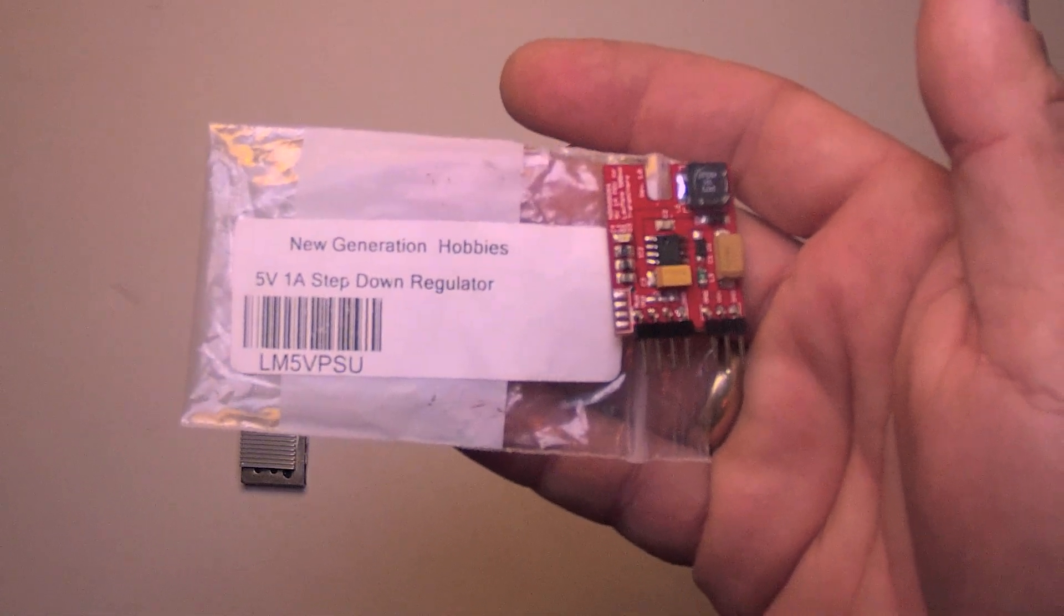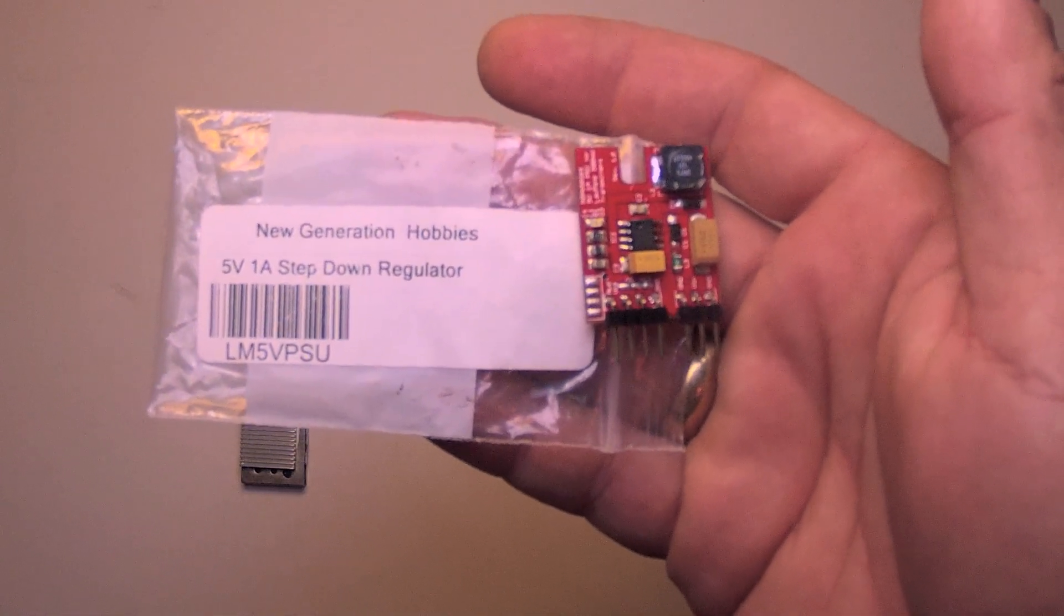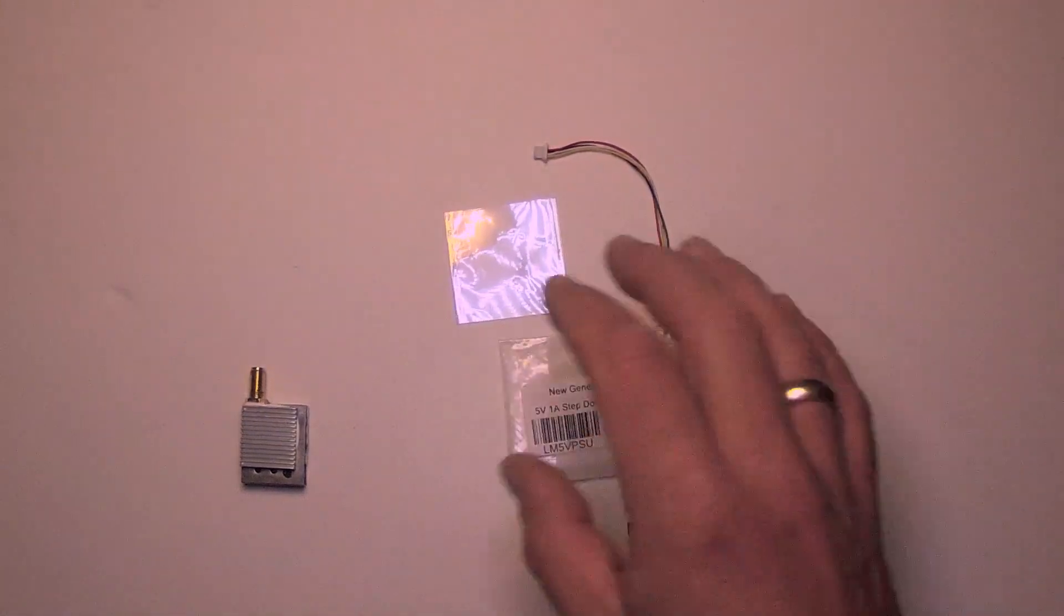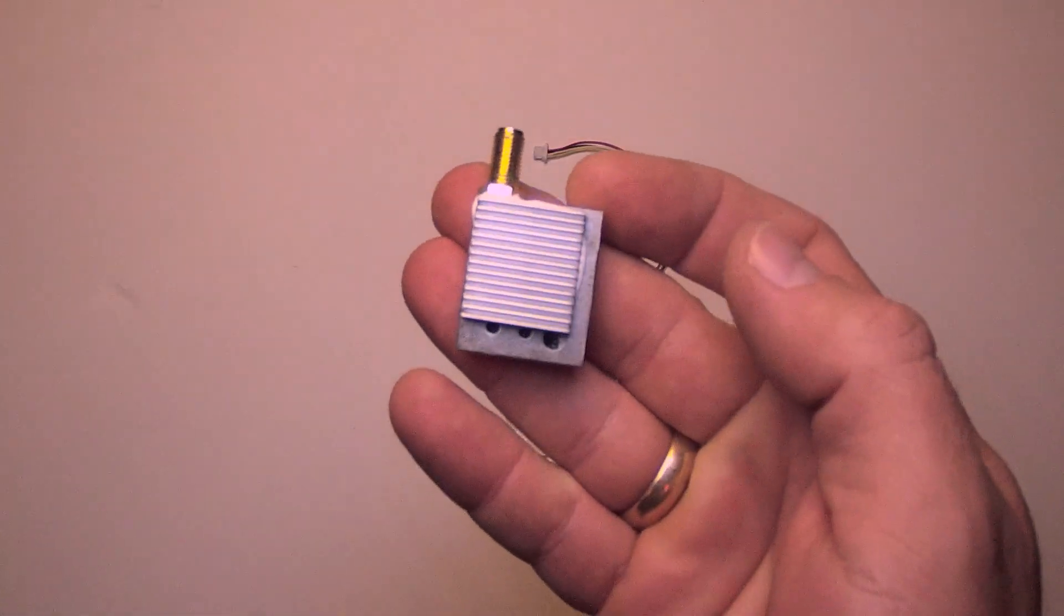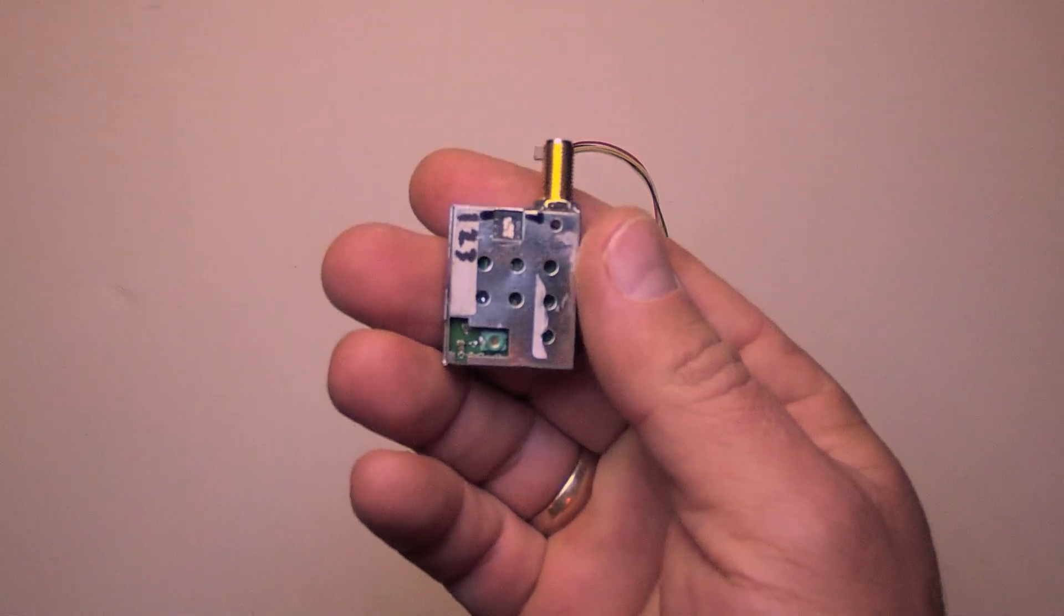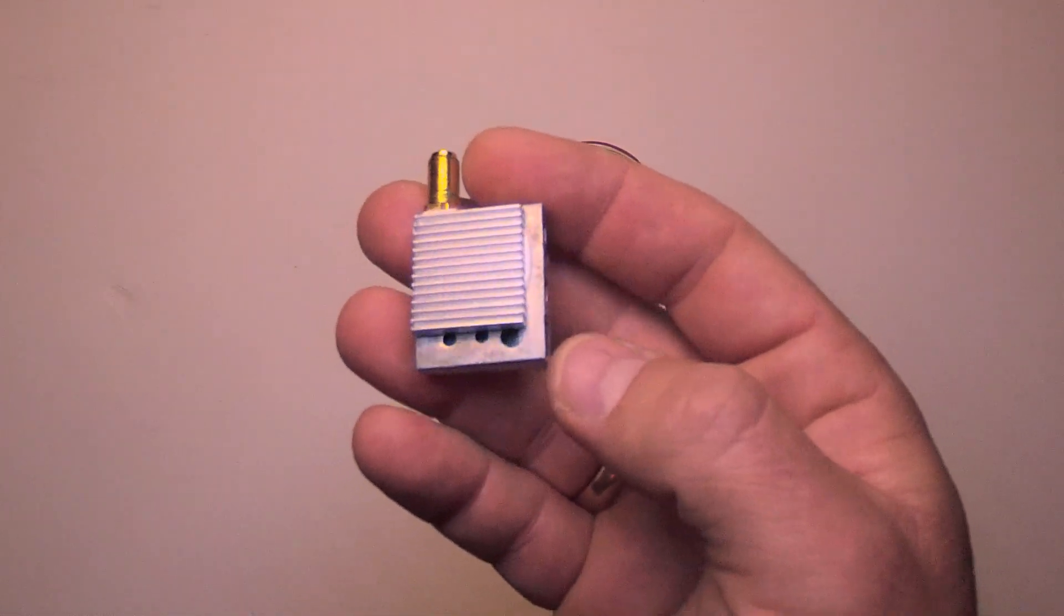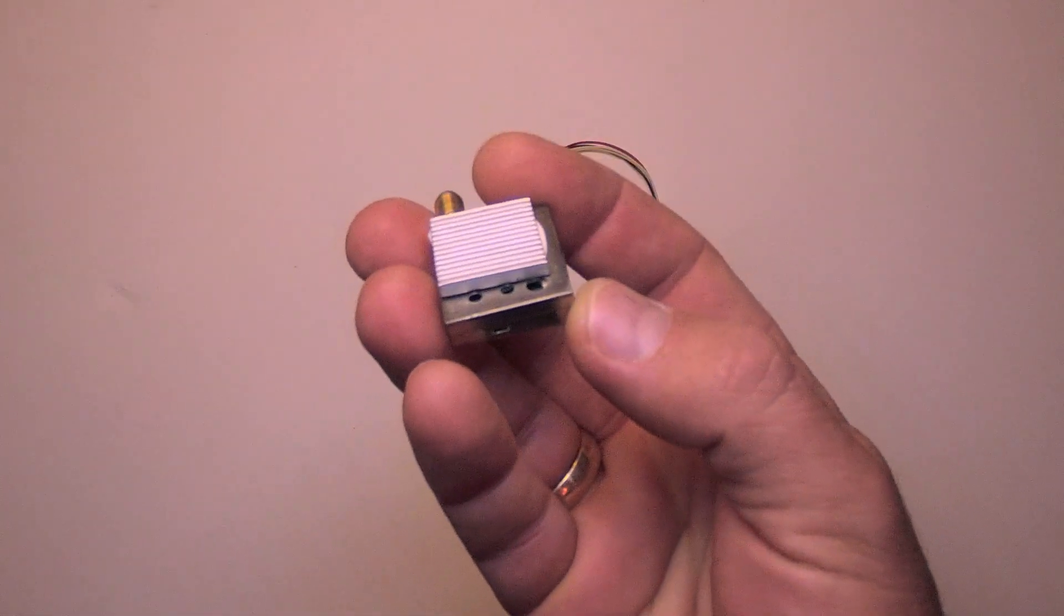In this video I'd like to show you the New Generation Hobbies Power Supply Unit for the Lawmate 500mW Video Transmitter Series. This video transmitter comes in 2.4GHz and 1.2GHz, and it's very popular with some very accomplished pilots.